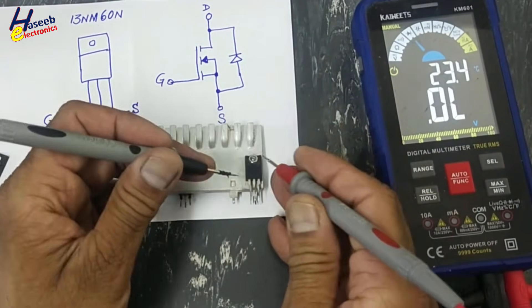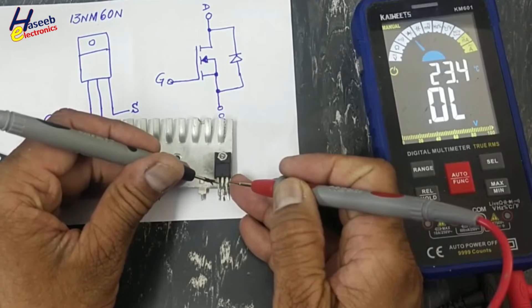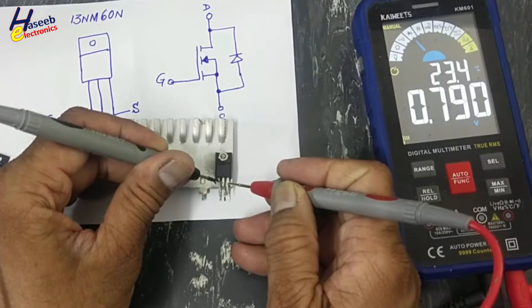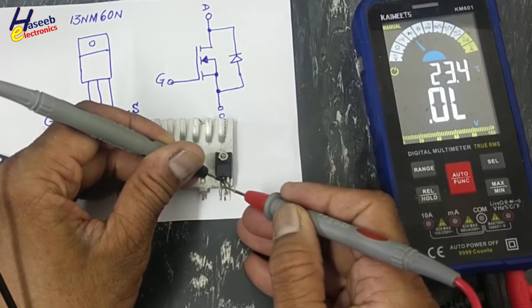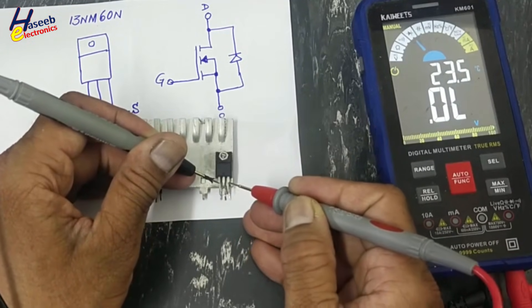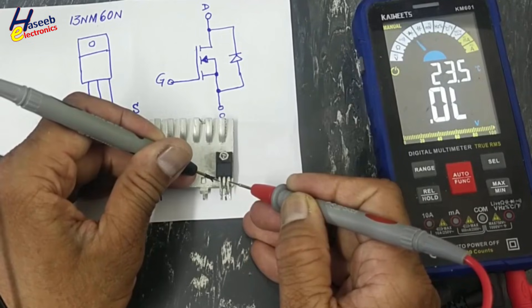Let's check this one. Drain and source - 0.79 volts. Reverse the leads - 0.79 volts.